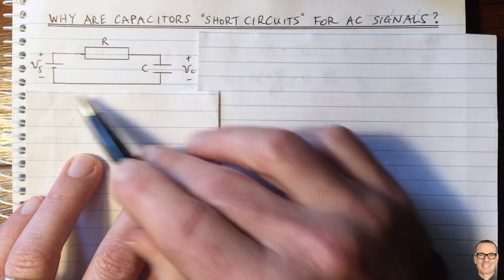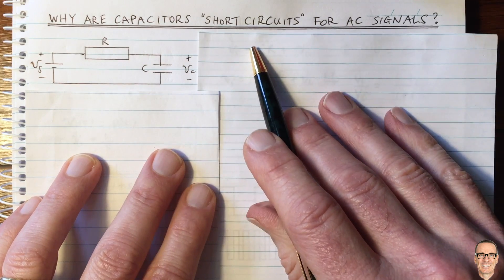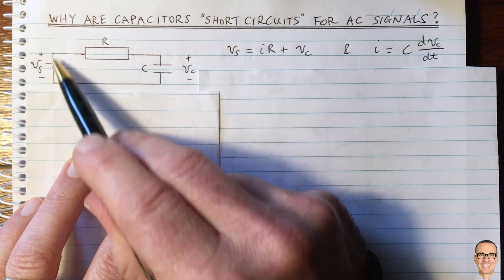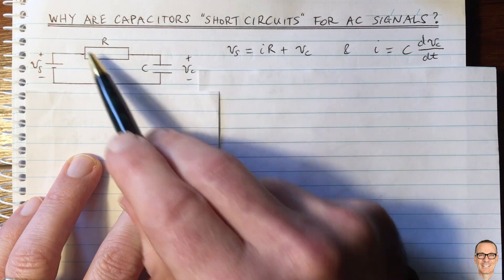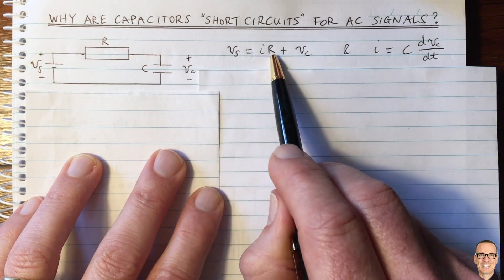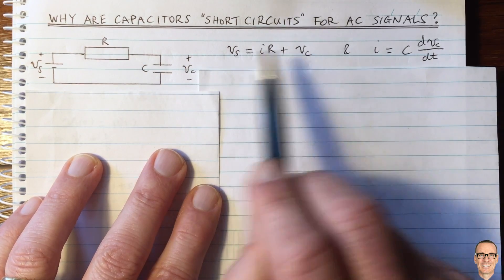Let's think about an equation for this circuit. We've got the voltage of the source equals the voltage drop across the resistor, IR, plus the voltage across the capacitor.